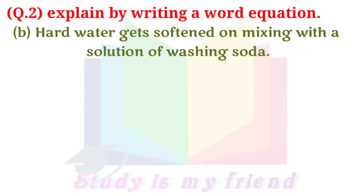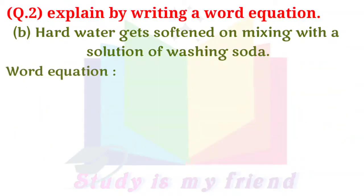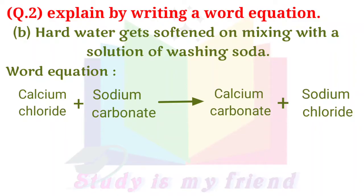B. Hard water gets softened on mixing with a solution of washing soda. Answer: Hard water does not form lather with soap and is brackish to taste. This is because hard water contains the chloride and sulphate salts of calcium and magnesium in dissolved state. When a solution of washing soda is added to hard water, it forms a precipitate of calcium carbonate and magnesium carbonate, which is removed by filtration. Thus, water is softened. Word equation: Calcium chloride + Sodium carbonate → Calcium carbonate + Sodium chloride.